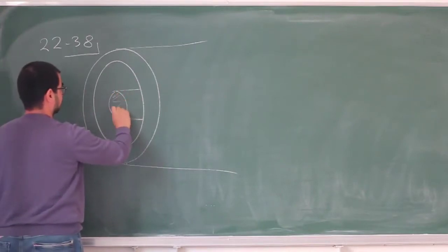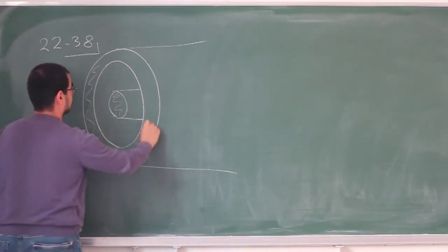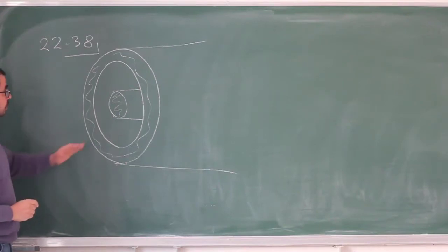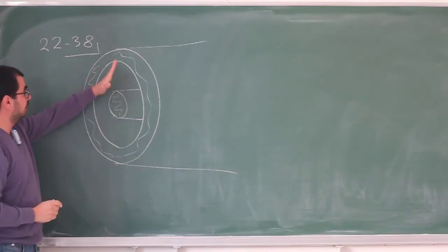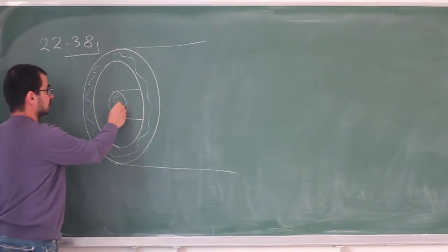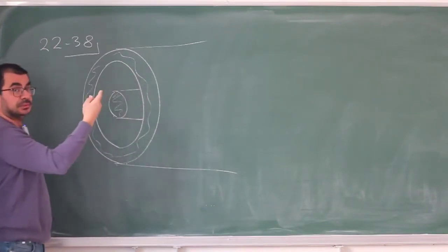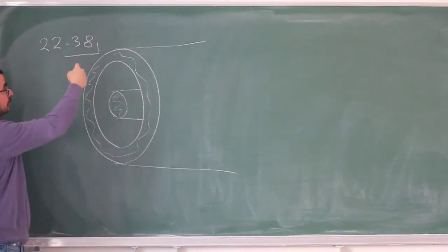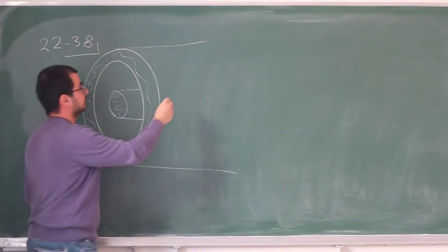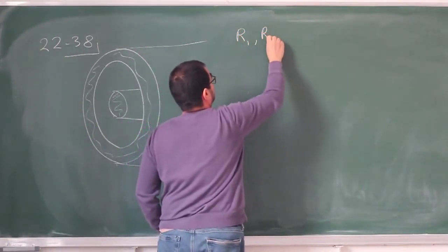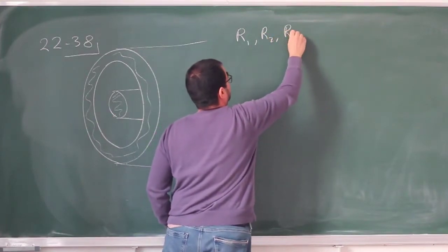There's stuff inside each cylinder, but in between them, there's some empty space. They give us the radii, going from inside to outside: the radius of the inner rod is R1, the inner radius of the cylindrical shell is R2, and the outer radius of the cylindrical shell is R3. So we have R1, R2, and R3.